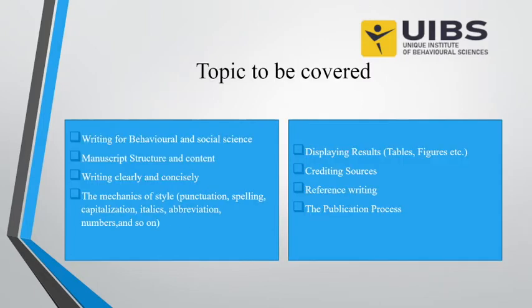APA has separate guidelines for different aspects of a research report, like what will be the structure and content of the manuscript, how to write clearly and concisely, how to use different style elements like punctuation, spelling, capitalization, italics, and abbreviation, how to display results, and how to credit sources.